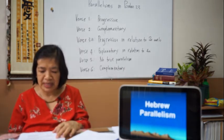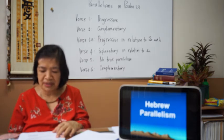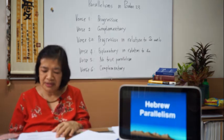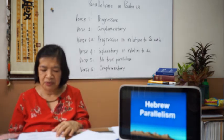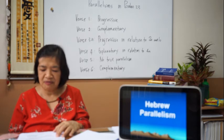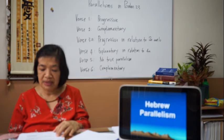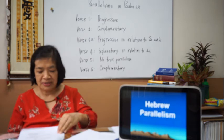Number two is the lexical aspect: the pairing of associated words which may or may not accompany grammatical parallelism. For example: 'The power of his deeds he told his people, in giving to them the inheritance of the nations' — pairing goyim (nations) with am (people).